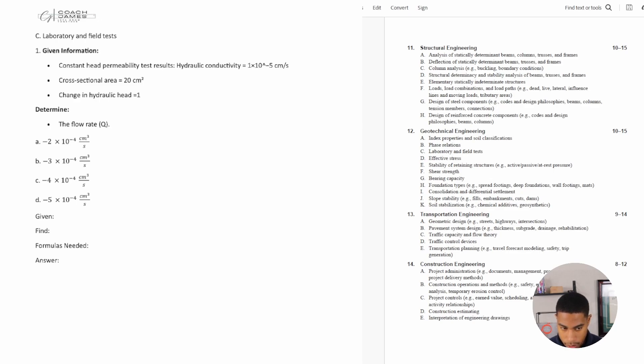So this is a bunch of information they're giving me, and what I want to do is write out the given information, the information that I'm trying to find, and any formulas that I may need to use. I'm given the hydraulic conductivity, the area, and the change in hydraulic head. We're trying to find the flow rate or Q.